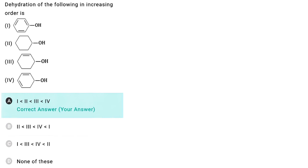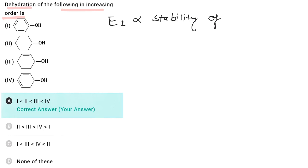In this question we have to find dehydration of the following in increasing order. Dehydration takes place via E1 mechanism, and the rate of E1 reaction depends on stability of carbocation. So higher is the stability of the carbocation, higher is the rate of dehydration when reaction takes place via E1 mechanism.